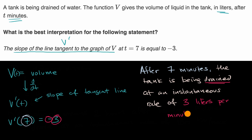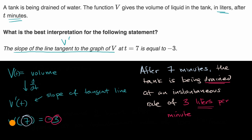And how did I know the units were liters per minute? Well, the volume function is in terms of liters, and the time is in terms of minutes. When you take the derivative with respect to time, it becomes liters per minute. And we are done.